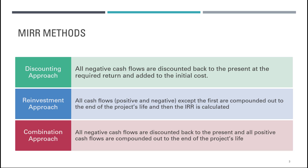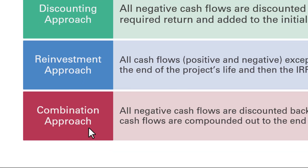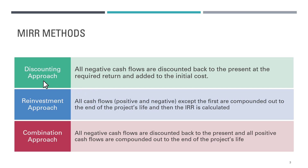There are three major approaches when it comes to computation of MIRR. The first one is the discounting approach, the second one is the reinvestment approach, and the third is the combination approach. For the discounting approach, all negative cash flows are discounted back to the present at the required return and then added to the initial cost. For the reinvestment approach, all cash flows positive and negative, except for the first one, are compounded out to the end of the project's life and then the IRR is calculated. For the combination approach, all negative cash flows are discounted back to the present and all positive cash flows are compounded out to the end of the project's life — it is a combination of the discounting and reinvestment approaches.